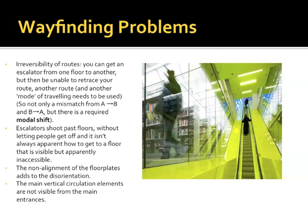So what is the reason for the wayfinding problems in Seattle Public Library? Firstly, it's the irreversibility of routes — the fact that it's possible to travel from A to B through one route and one mode, but in order to travel back again you're unable to retrace your route and quite often need to make a change in your mode of traveling. For example, you go from A to B by escalator; to go from B to A you have to go by elevator or stairs. Then there's the fact that the escalators shoot past floors without letting people off, and it isn't always apparent how to get to a floor that is visible but apparently inaccessible. Then there's the non-alignment of the floor plates, which adds to people's overall spatial disorientation. And finally, the fact that the main vertical circulation elements are not visible from the main entrances.